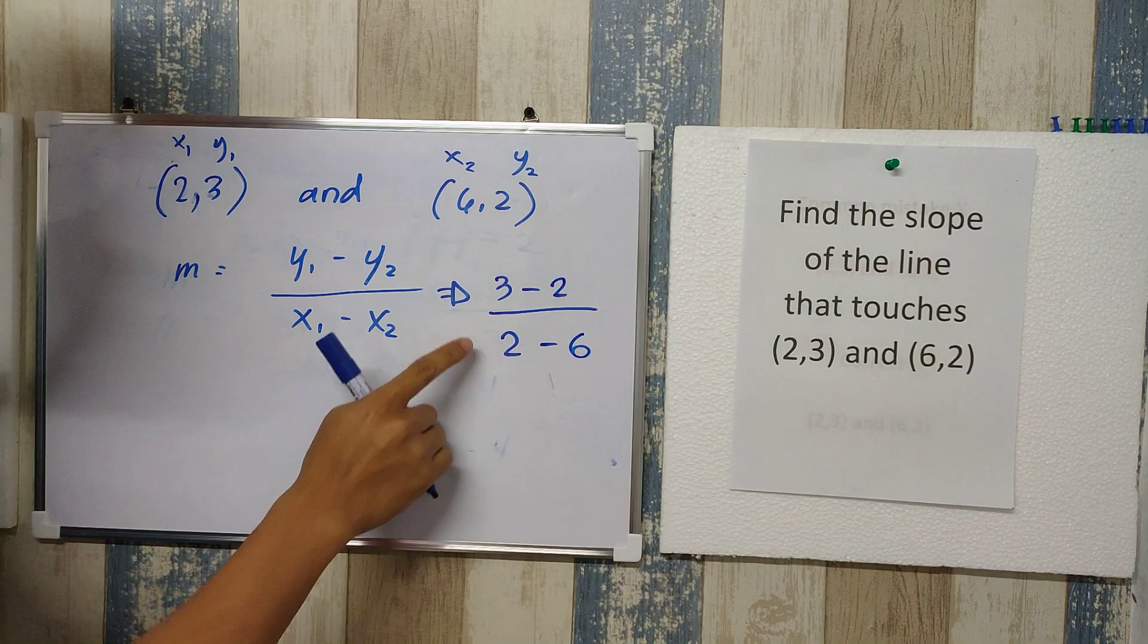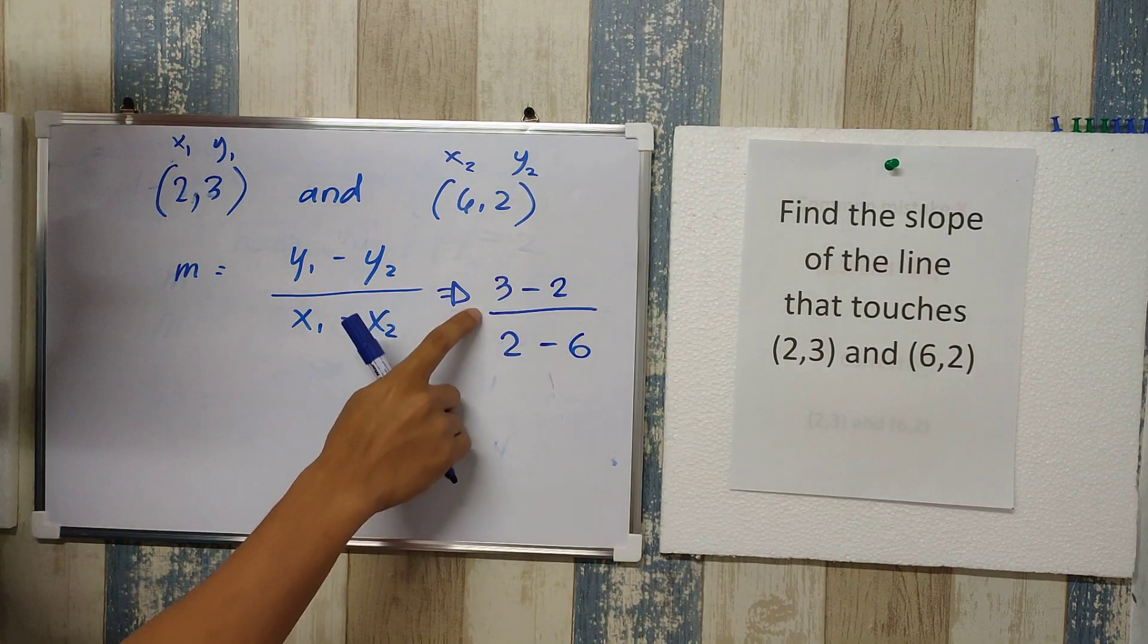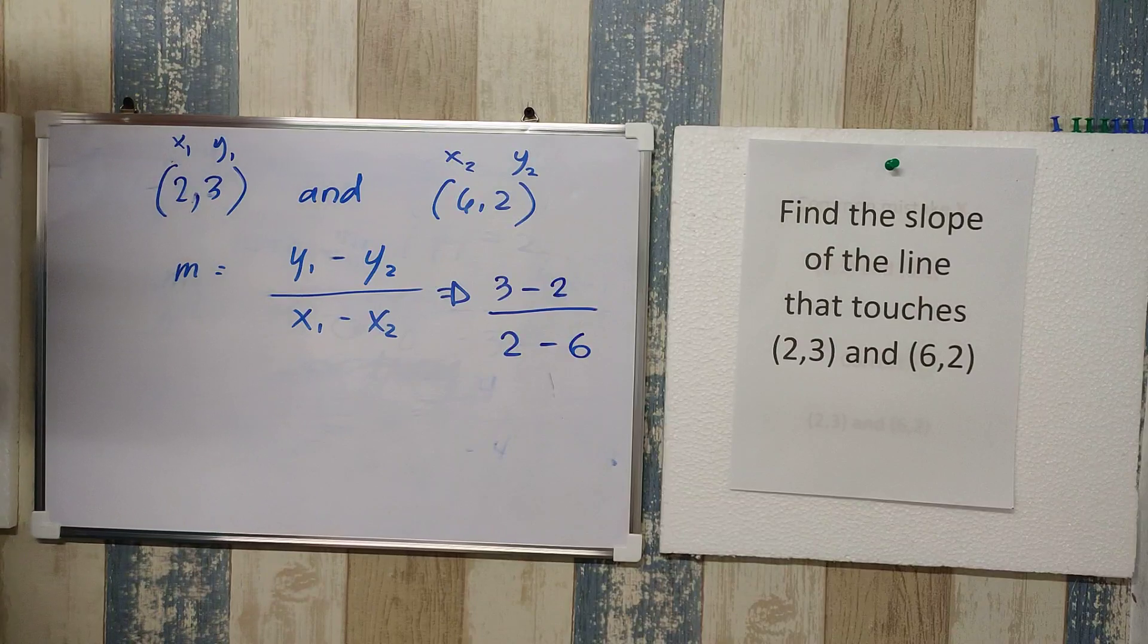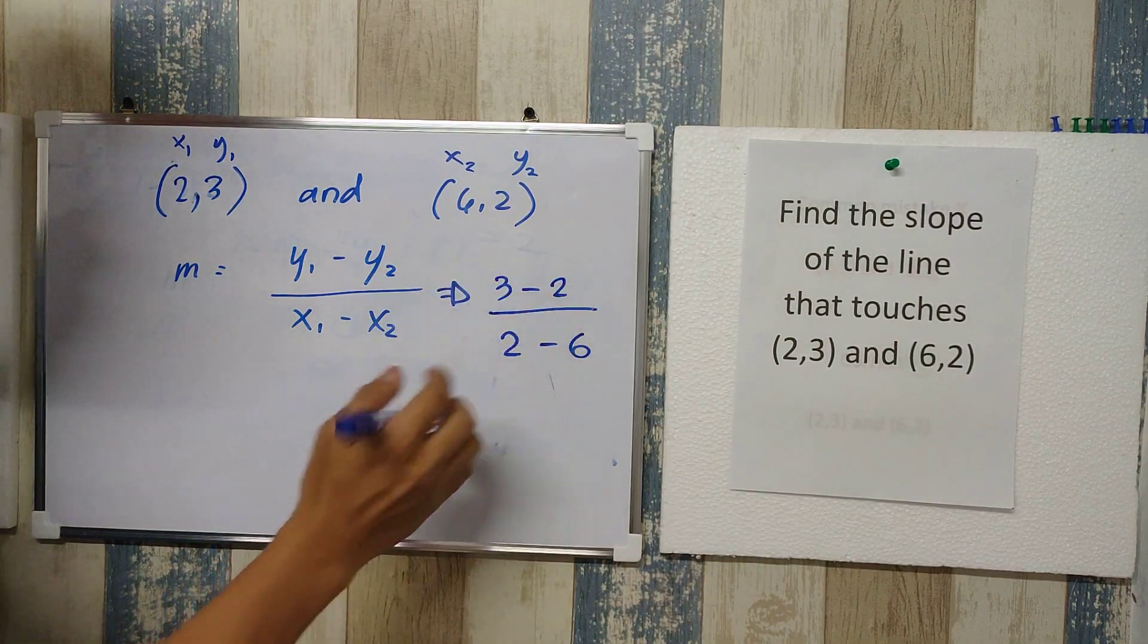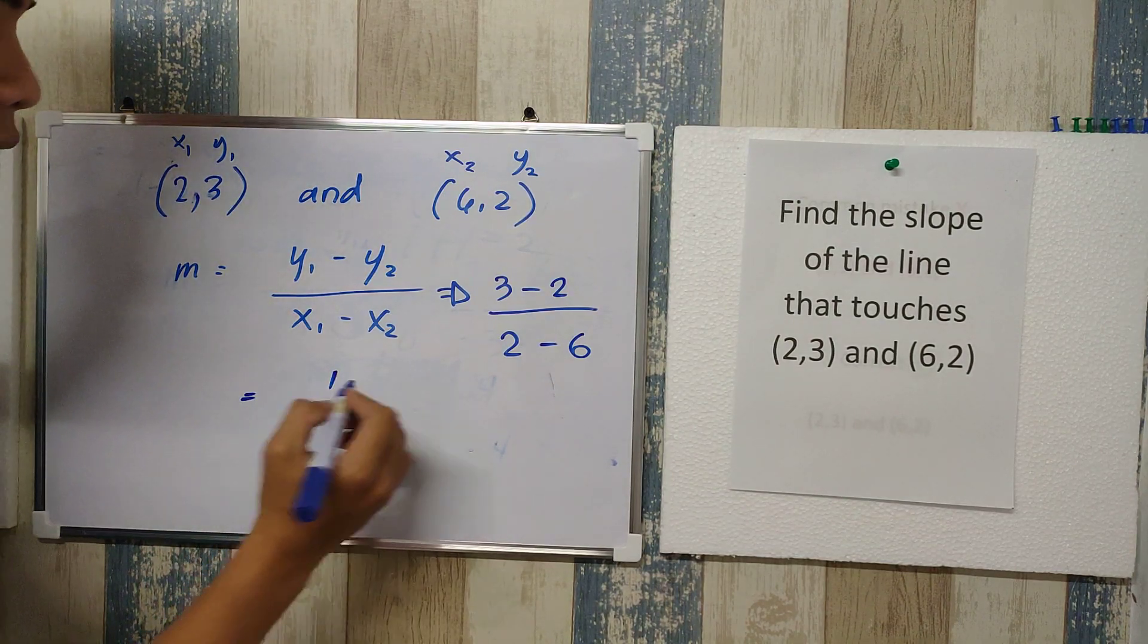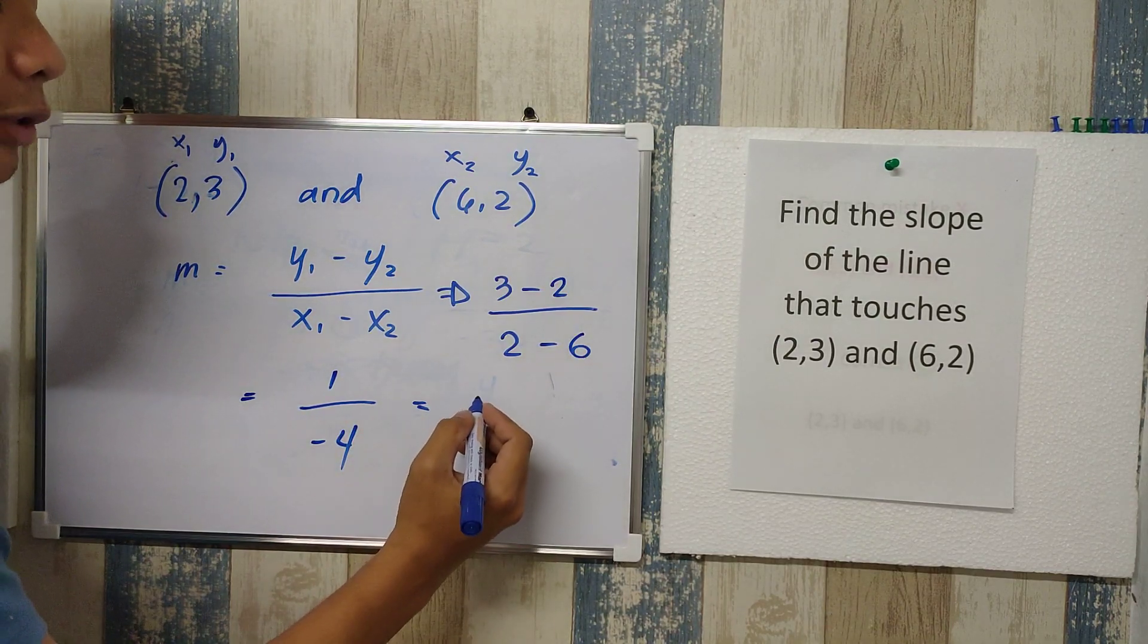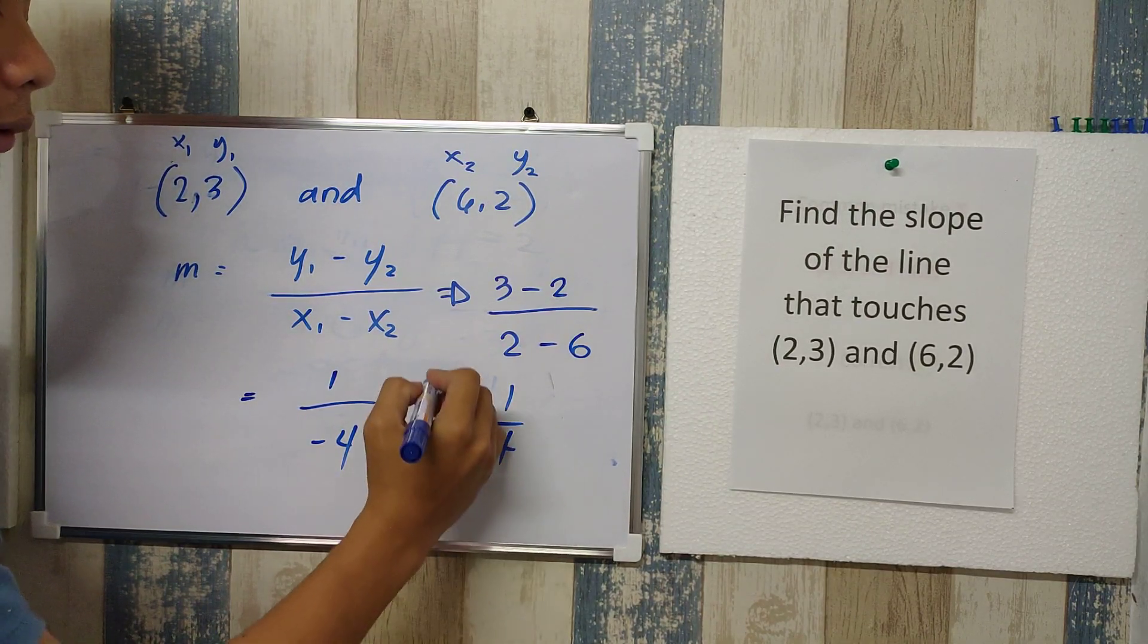There's nothing to complicate on this one. Nothing really complicated here, just not like the first example. We have to operate. 3 minus 2 is positive 1 over 2 minus 6 which is negative 4. And as a final answer, we have here negative 1 fourth.